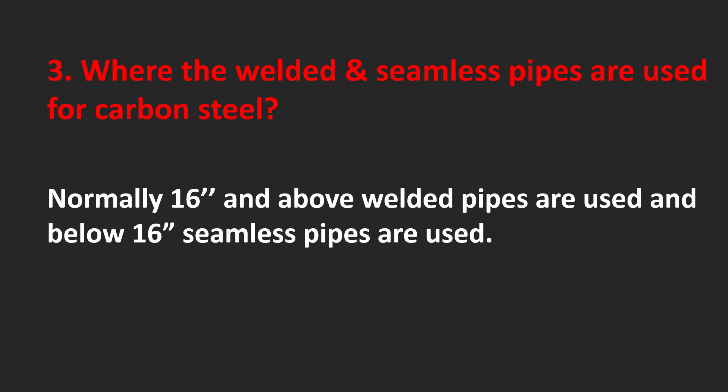Where are welded and seamless pipes used for carbon steel? Normally 16 inch and above, welded pipes are used, and below 16 inch, seamless pipes are used.